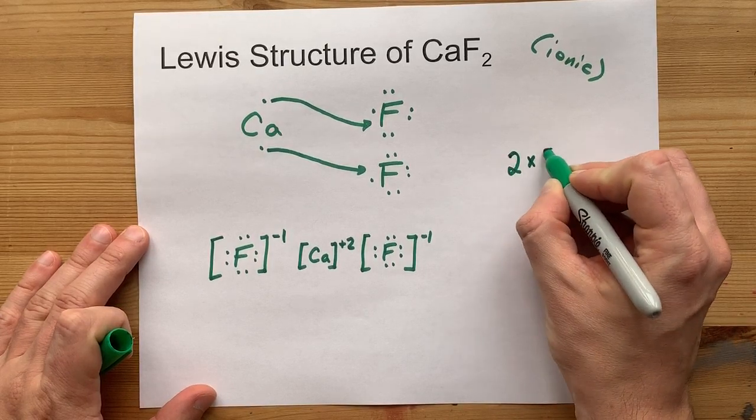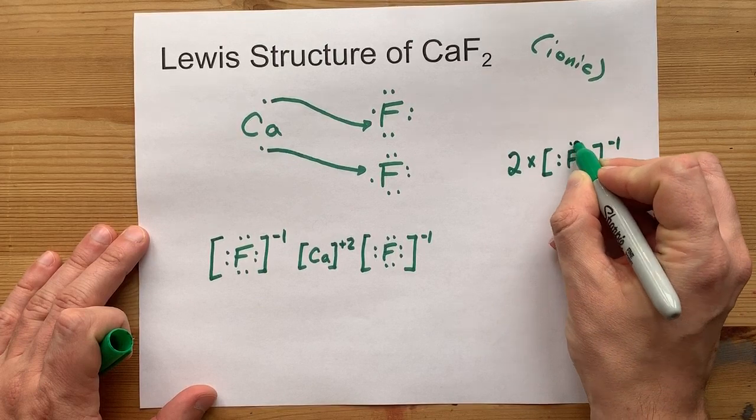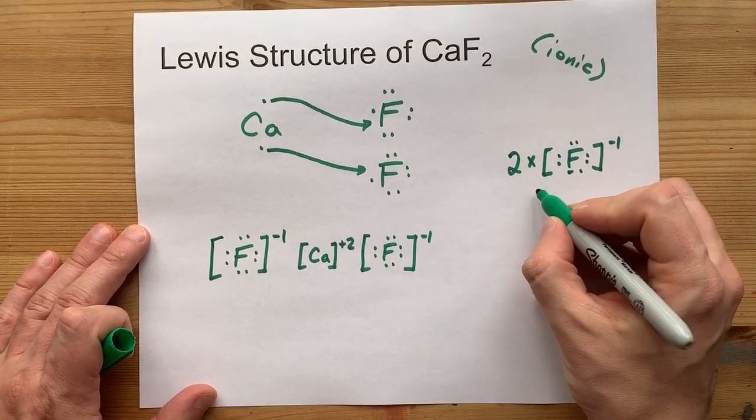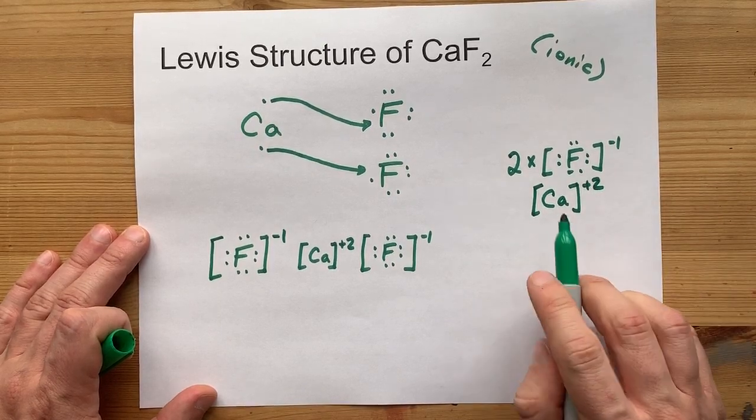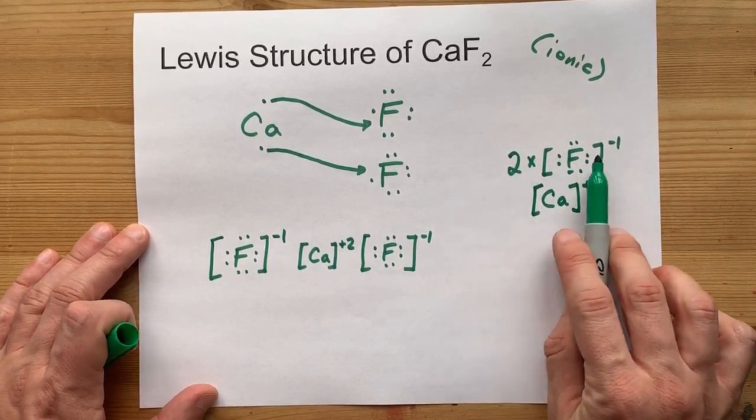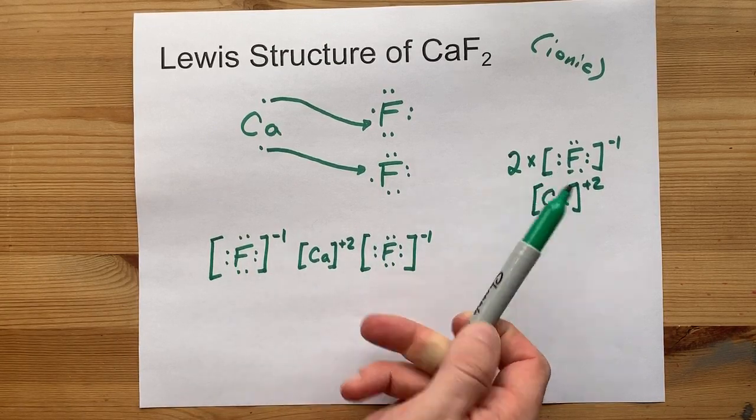You might be allowed to take a shortcut here and draw two times that F with its eight electrons and minus one charge. As long as you also show the calcium with the plus two charge, it just saves you from having to draw it out twice. I prefer this one. This one's also valid.